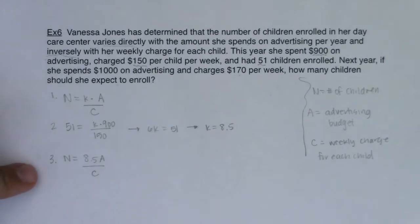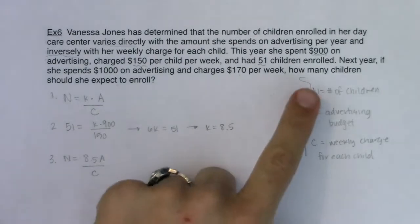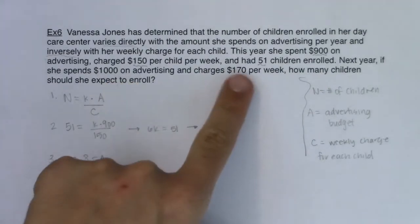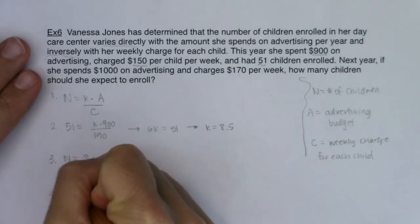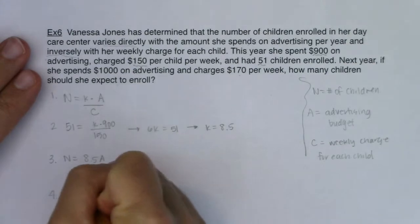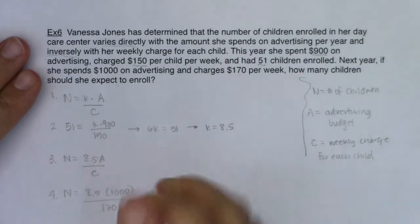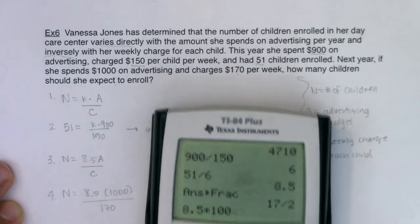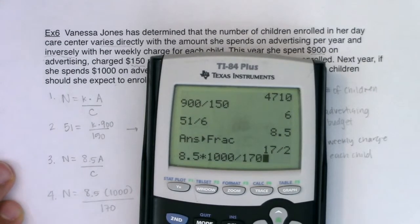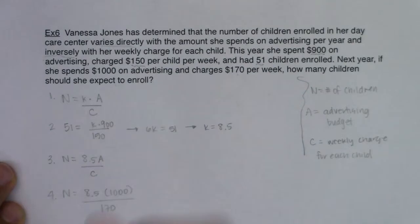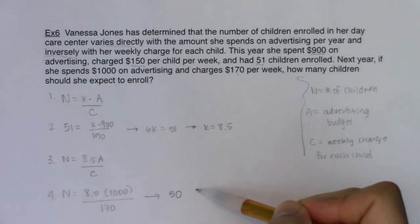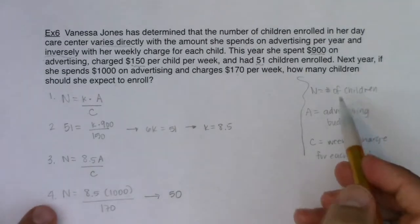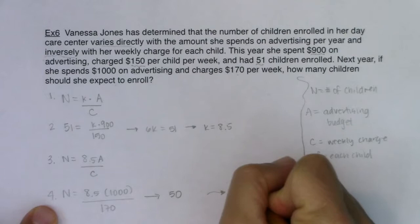Next, I substitute the remaining values and solve for the unknown quantity. The unknown is n — the number of children. I have a new advertising budget of $1,000 and a new charge of $170 per week. So n = 8.5 times 1,000 divided by 170. That gives 8,500 divided by 170, which equals 50. The units are number of children, so n = 50 kids.